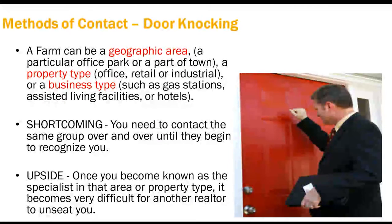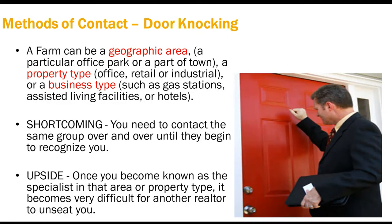The most commonly discussed long-term method of prospecting is farming. A farm can be a geographic area such as an office park, a property type such as office, retail, industrial, or hotels, or a business type such as gas stations or assisted living facilities. The downside to farming is that you'll probably need to contact the same group of businesses over and over until they begin to recognize you — it might take a year to 18 months to see any results. But the upside is that once you become known as a specialist in that area or property type, it becomes very difficult for another realtor to unseat you.